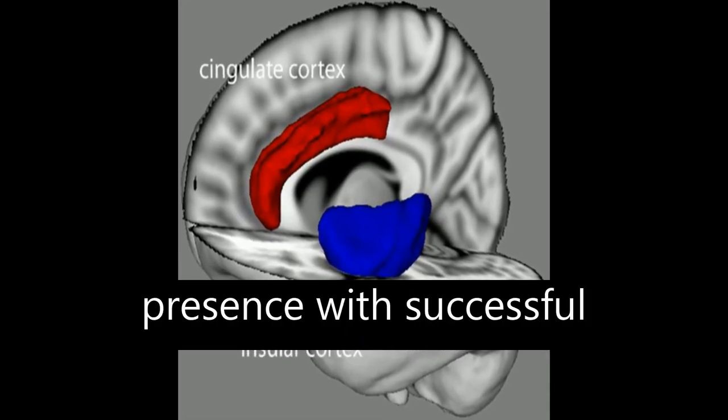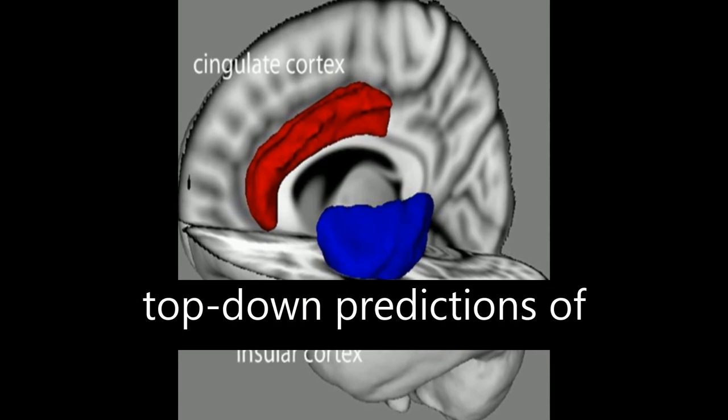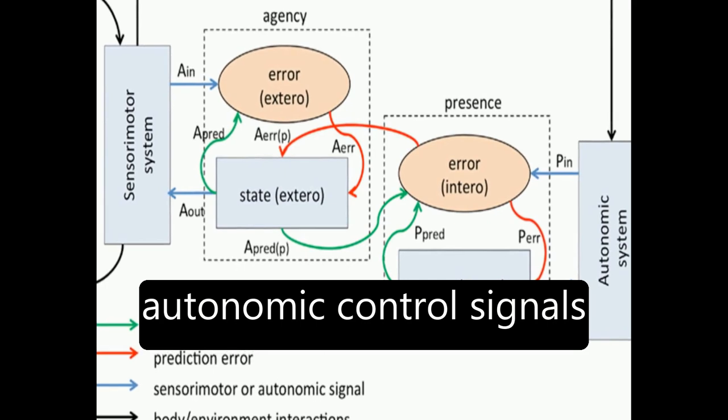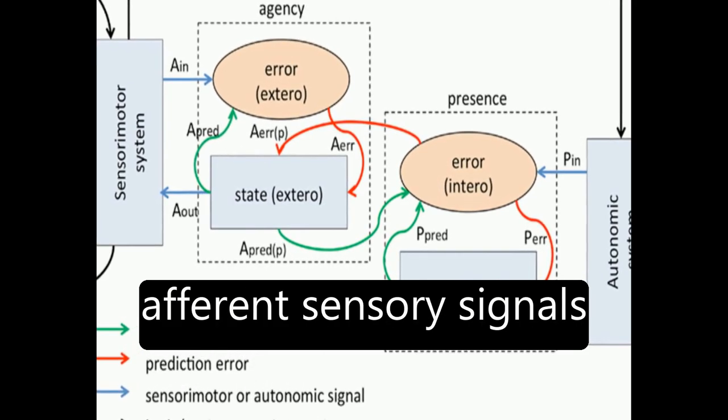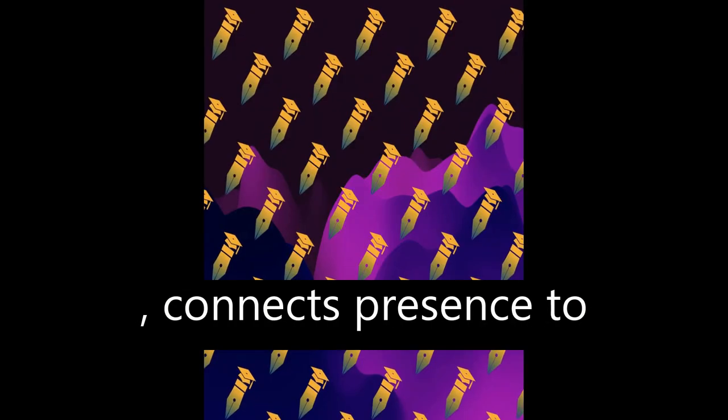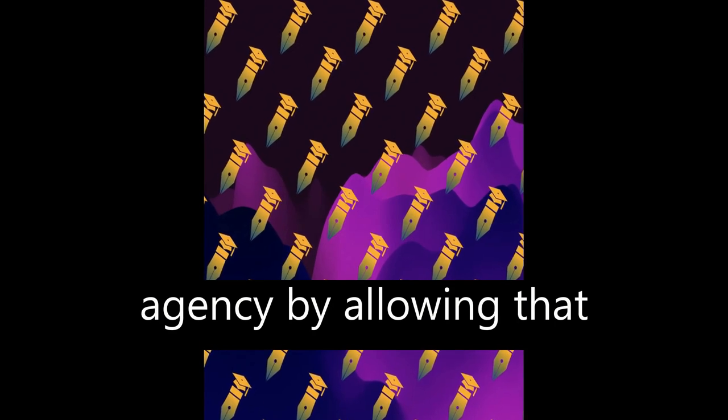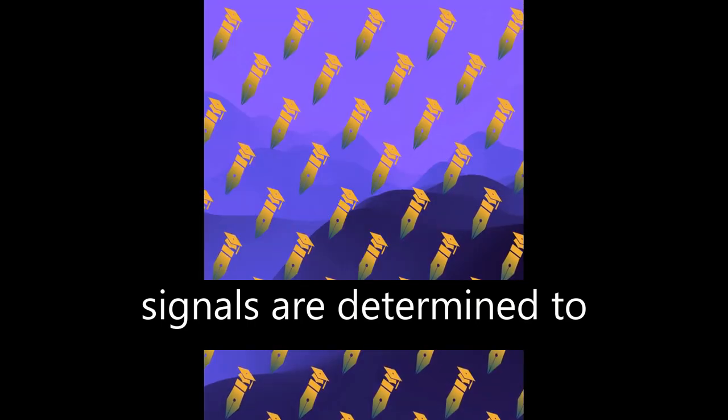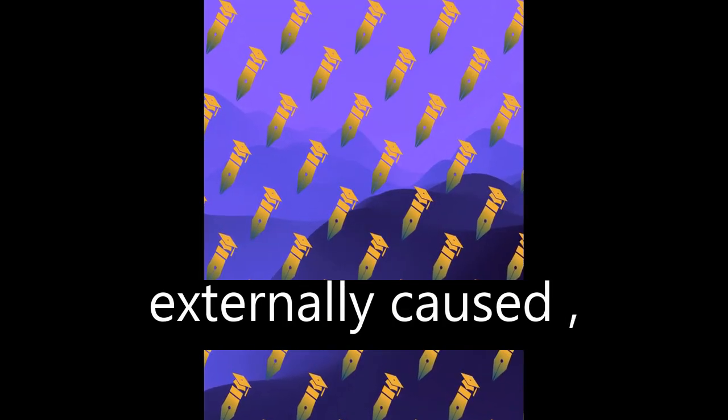The model associates presence with successful top-down predictions of informative interoceptive signals evoked by autonomic control signals and visceral responses to afferent sensory signals, and connects presence to agency by allowing that predicted interoceptive signals will depend on whether afferent sensory signals are determined to be self-generated or externally caused.